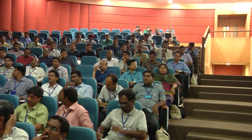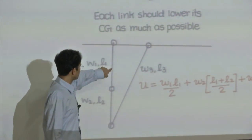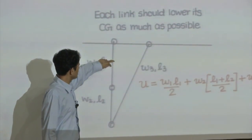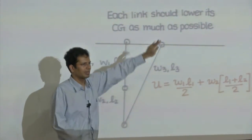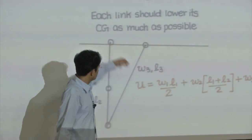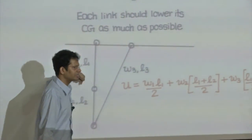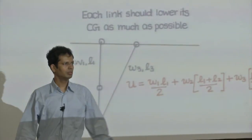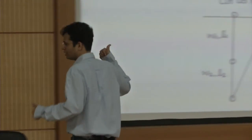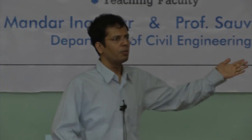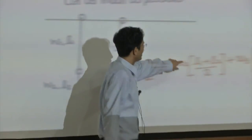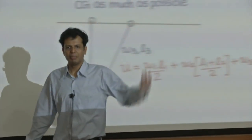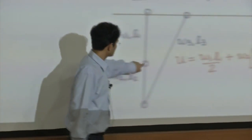In the second diagram, the last term is W3 times (L1 plus L2) by 2. Assuming uniform mass distribution, the center of gravity is at the center of each link. The vertical height for the center of the third link is L1 plus L2 by 2 — that is the distance from the pin to the center. This is the global minima and this configuration will be a stable configuration. Sorry for the earlier error — it is L1 plus L2 by 2, not a comma.